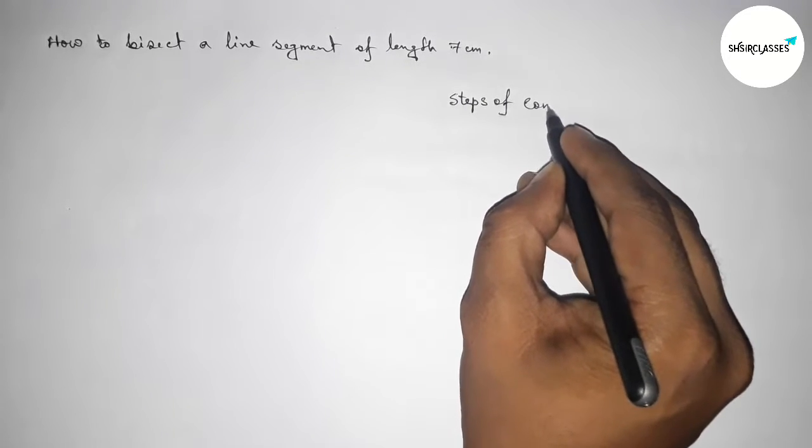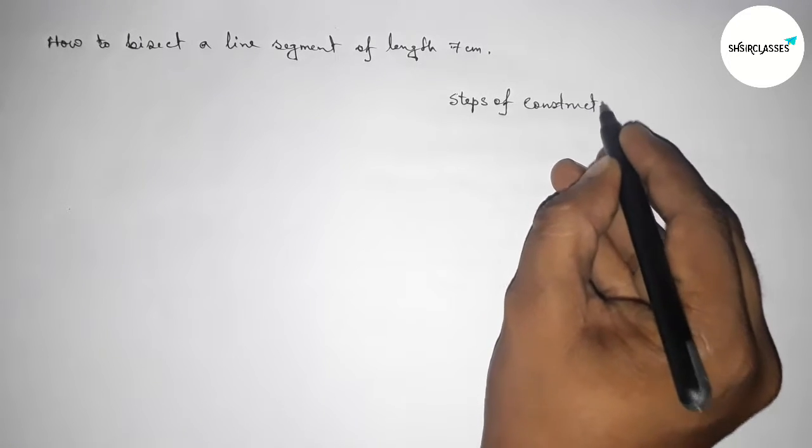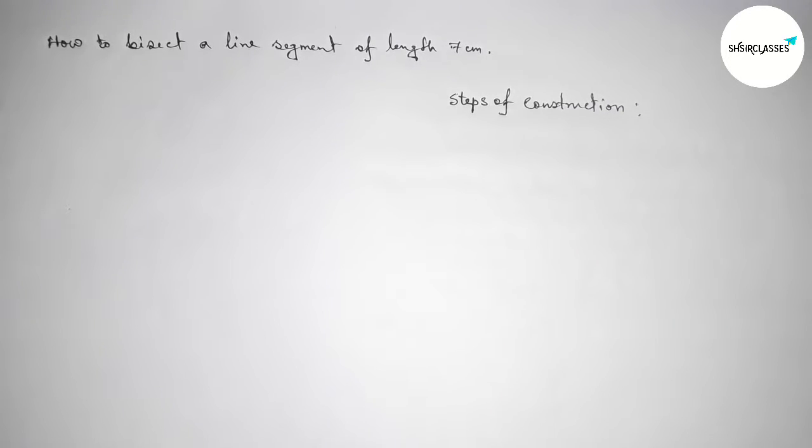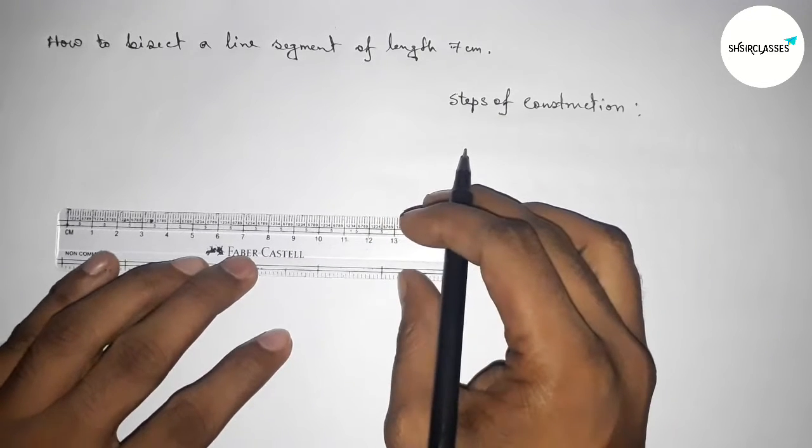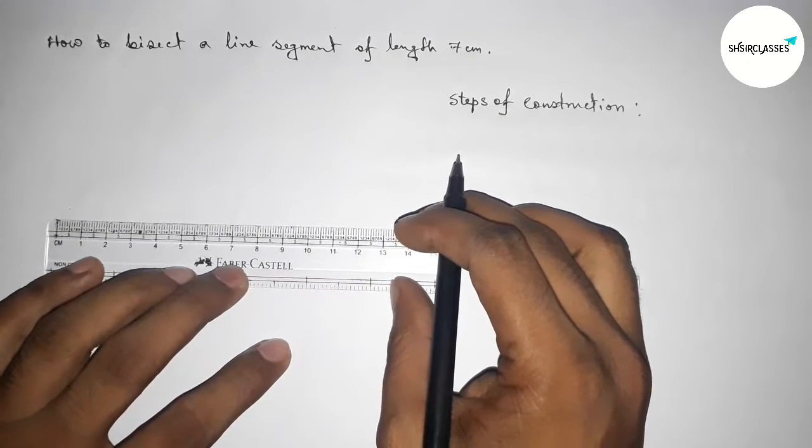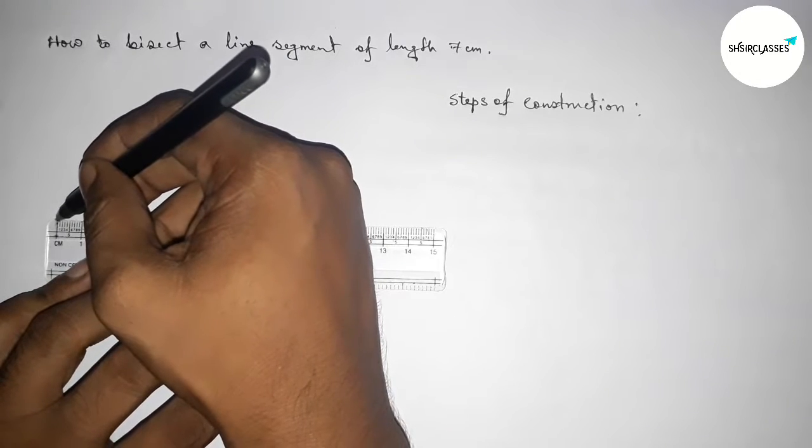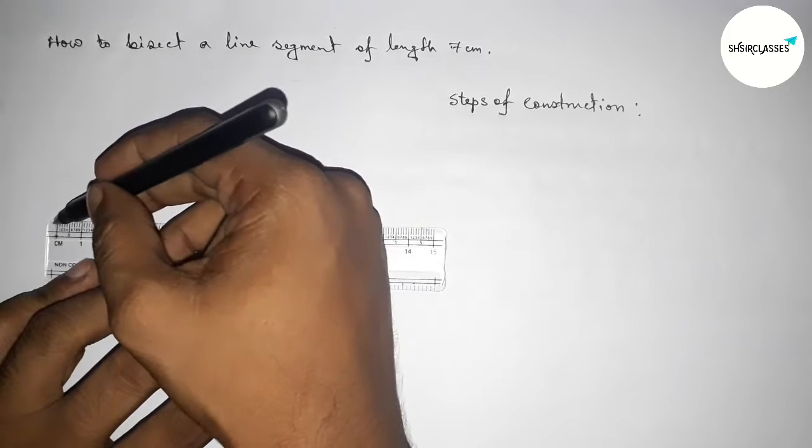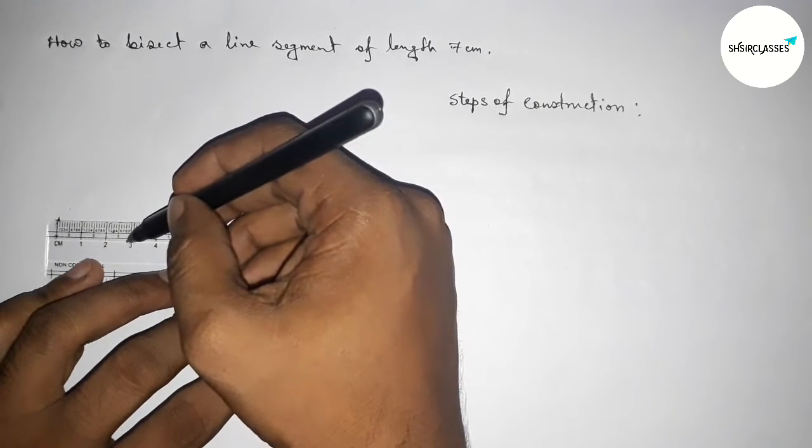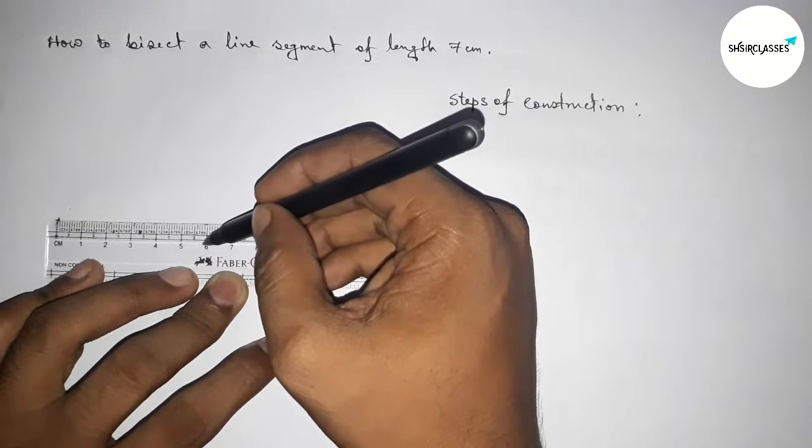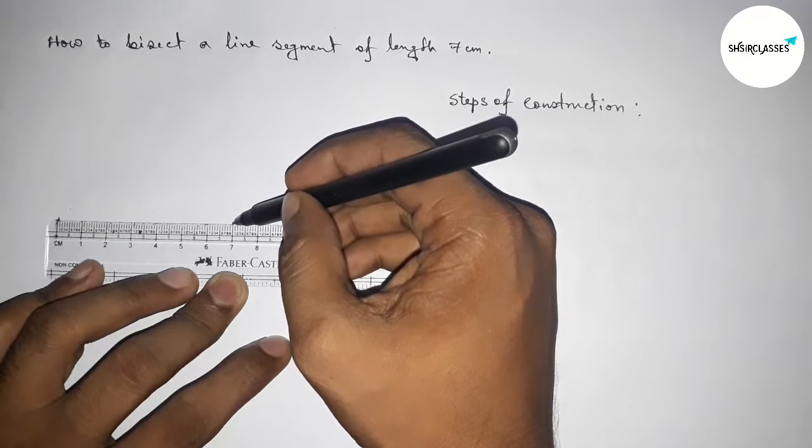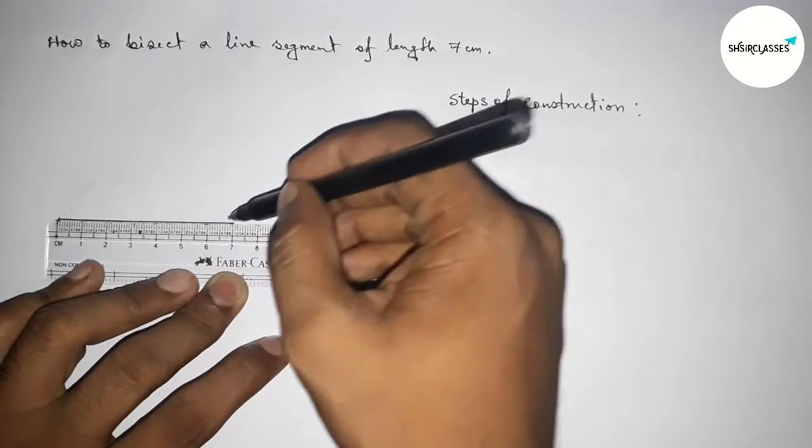Okay, so now first we have to draw here a line of length 7 centimeters. So this is starting at 0, and this is 1, 2, 3, 4, 5, 6, 7. So this is a 7 centimeter line segment.